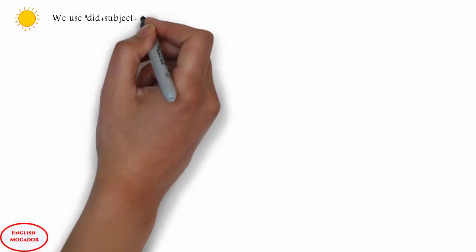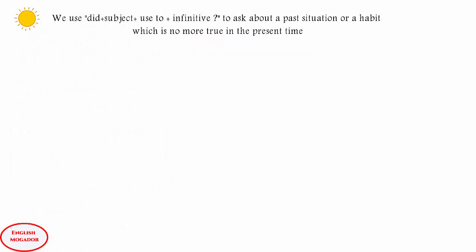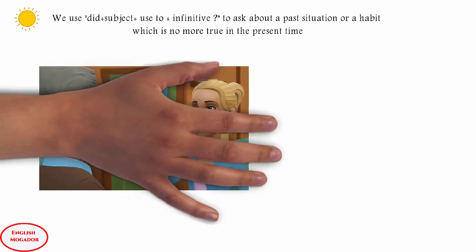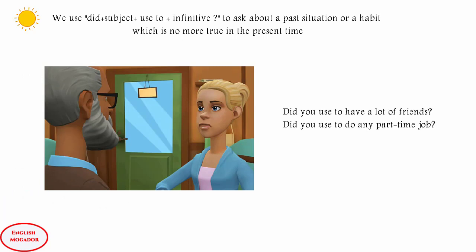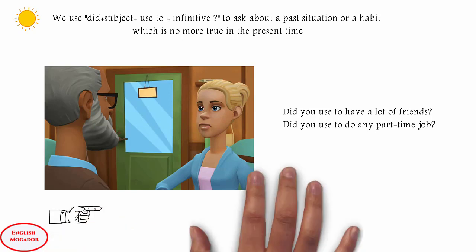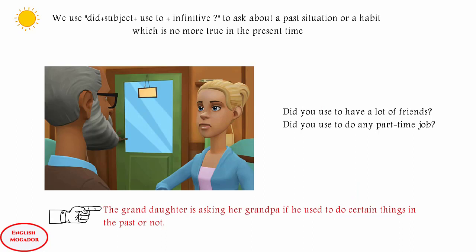Now it's time to consider some interrogative cases. We use the form 'did' plus subject plus 'use to' plus infinitive to ask about a past situation or a habit that is no more true in the present time. For example: 'Did you used to have a lot of friends?' 'Did you used to do any part-time job?' The granddaughter is asking her grandpa if he used to do certain things in the past or not.